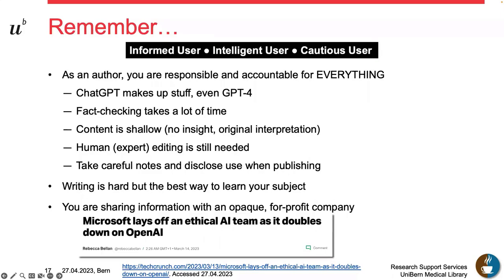Finally, remember that as an author you are accountable and responsible for everything. If you misrepresent information or do not reference accurately and precisely — even by negligence — it is considered scientific misconduct. ChatGPT makes stuff up, even the paid version, and fact-checking takes a lot of time, so allow time for that if you're going to use the tool. The content it produces is shallow, not original, and lacks insight. You must be or become the expert. Text will still require editing — it does not produce ready-to-print prose — so take careful notes and disclose, disclose, disclose when publishing.